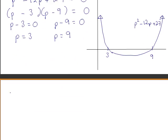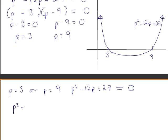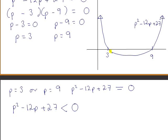When p is equal to 3 or p is equal to 9, the value of our quadratic expression is equal to 0. But we were asked to solve p squared minus 12p plus 27 less than 0. This corresponds to the part of the curve that is below the x-axis.